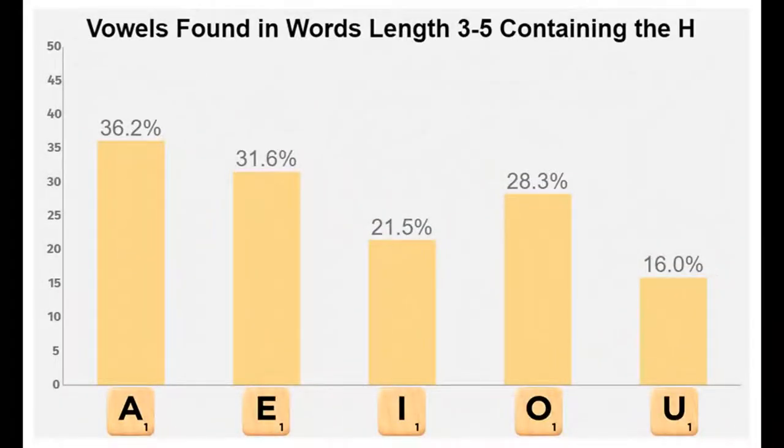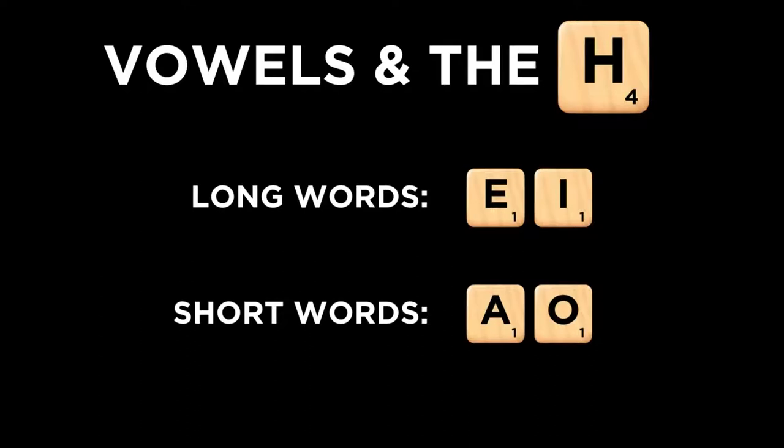However, shorter H words of three to five letters in length are a very different story. The A jumps into the top spot, just ahead of the E, while the O gets a huge boost as well, far ahead of the I. The takeaway here is that the E and I gain chemistry with the H as word length increases, and the A and O gain chemistry with the H as word length decreases.